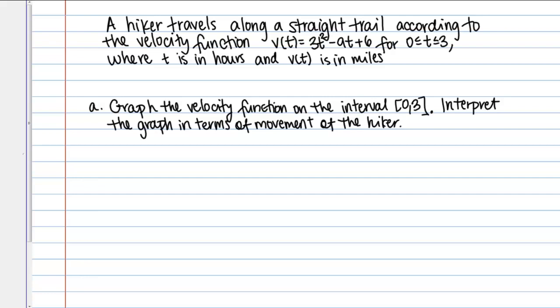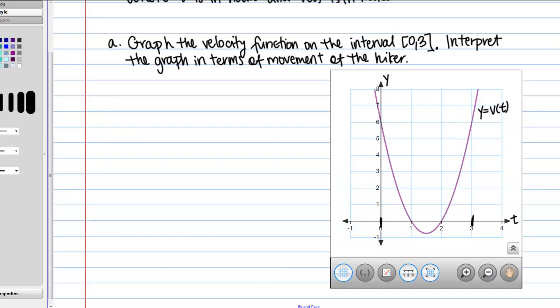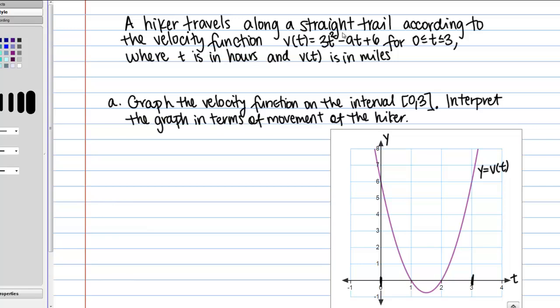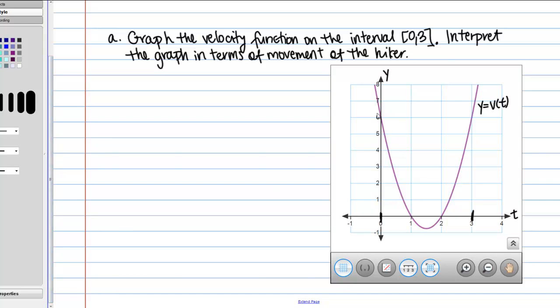Part A says to graph the velocity function on the interval from 0 to 3, and then to interpret the graph in terms of movement of the hiker. Here I've inserted a graph of our function — a graph of our velocity function — given by this quadratic: 3t² − 9t + 6. This is a graph of his velocity, not his position, so keep that in mind.